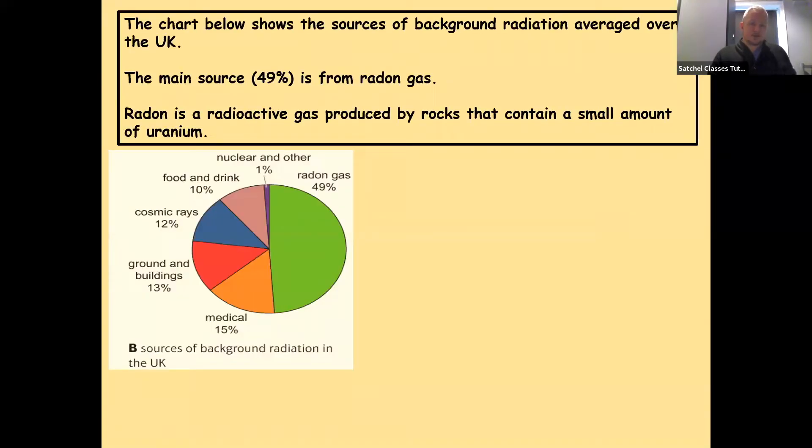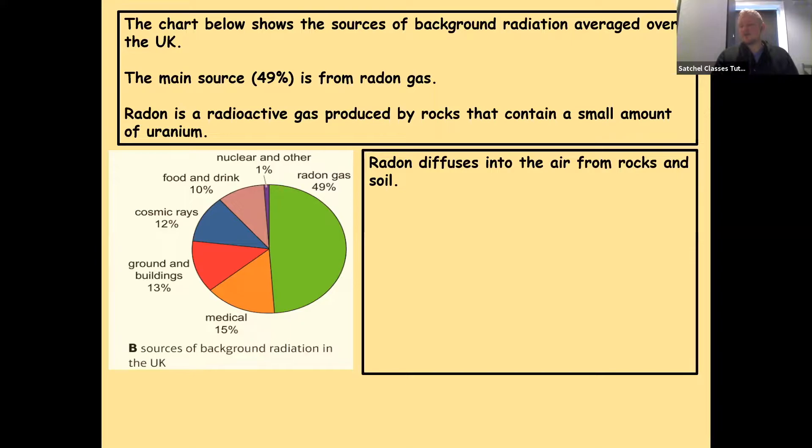The main source, 49%, is from radon gas. Radon is a radioactive gas produced by rocks that contain a small amount of uranium. Radon diffuses into the air from rocks and the soil. It can build up in houses, especially when there's poor ventilation.